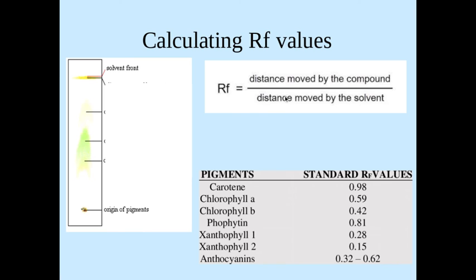That's the solvent front, so you'd be doing the distance moved by the compound from here to here divided by here to here, the solvent front. The solvent from the origin to the solvent front always goes on the bottom. You're usually measuring in millimeters because it's more accurate than measuring in centimeters. That would be on the top and then you divide that by the solvent front measuring in millimeters.